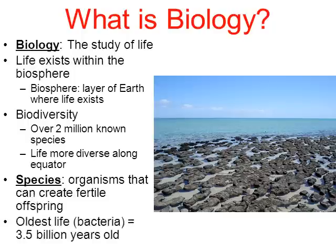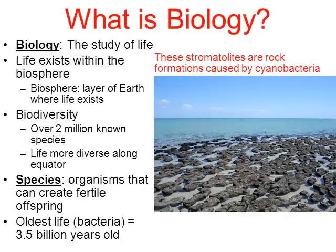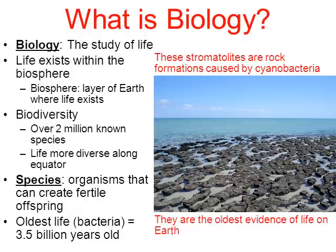From what we can tell, the oldest life on Earth, thought to be bacteria, existed around three and a half billion years ago. These are called stromatolites — rock formations that accumulate because of the actions of a bacteria known as cyanobacteria. Stromatolites are some of the oldest evidence for life on Earth, and using radiometric dating we find them to be about three and a half billion years old.